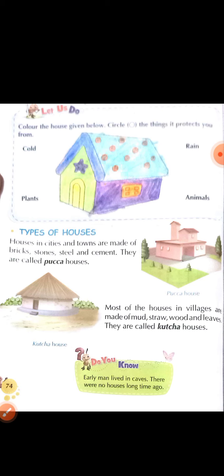Most of the houses in villages are made of mud, straw, wood and leaves. Jaise village mein, gaon mein, kaisa bana hua hota hai ghar? Mud se, straw se, wood and leaves se. In sabhi se banne wala jo house hota hai usko kaccha house kehte hai. Woh lambe samay tak nahi tik sakta. Usko kaccha house kehte hai.